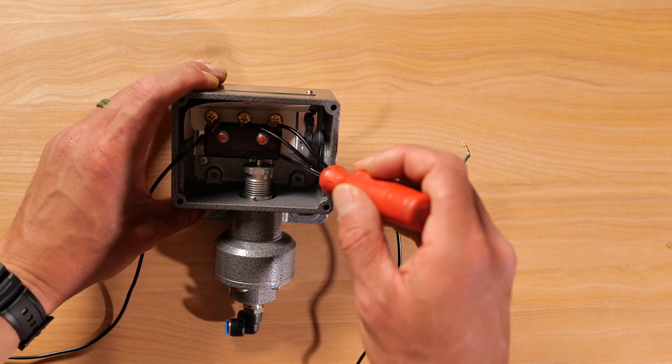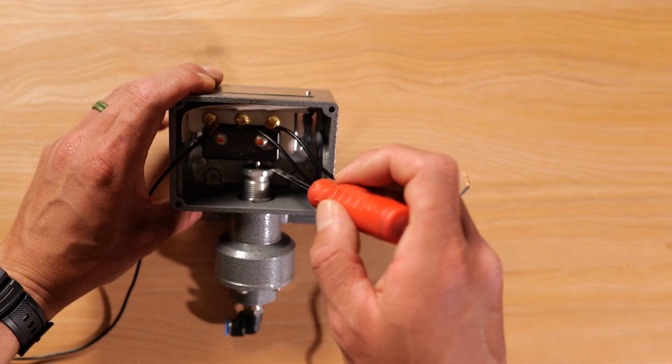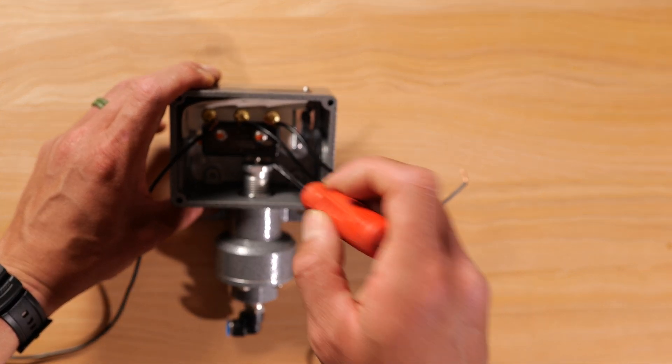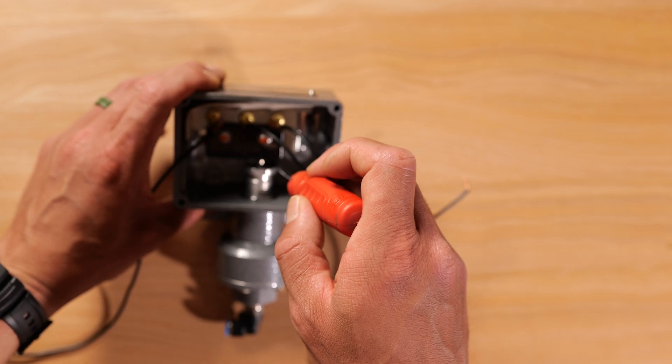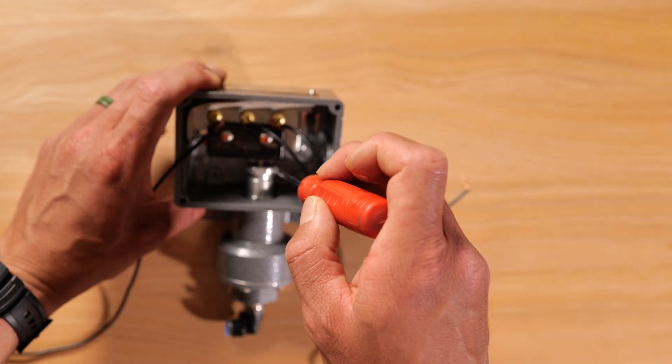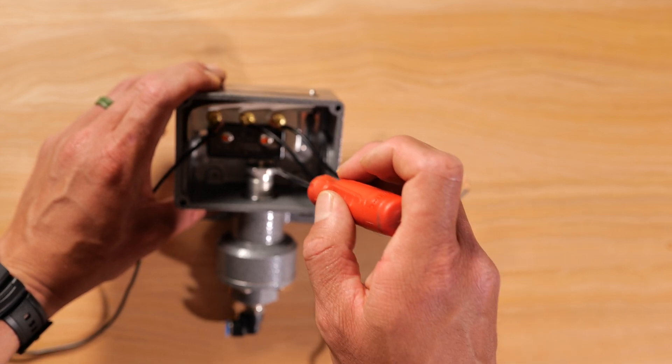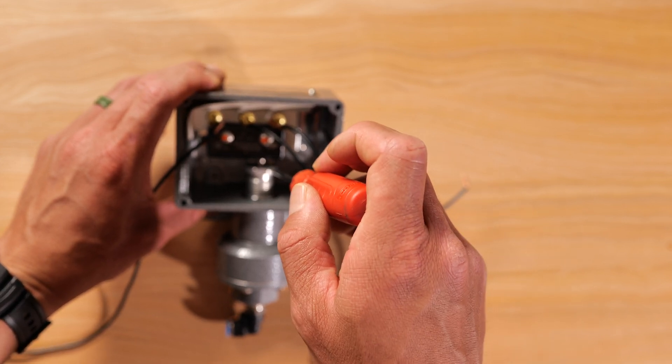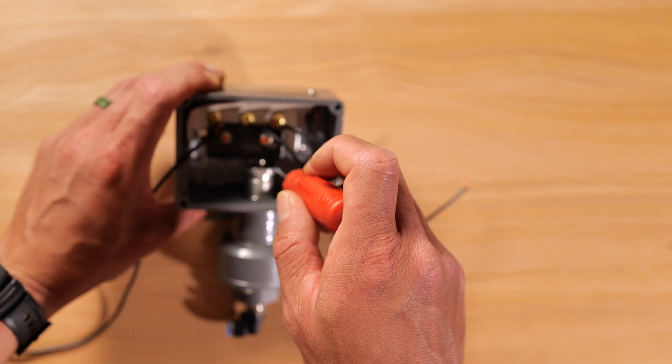So behind here you'll have an indicator with a number telling you in PSI how much pressure or what set point you have this mechanical pressure switch roughly set at. So it's not really a specific number. It's really just as a guide.